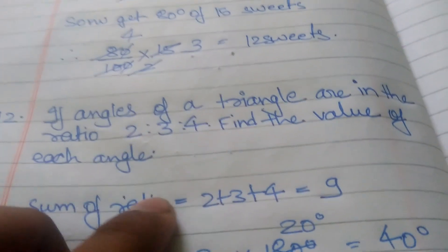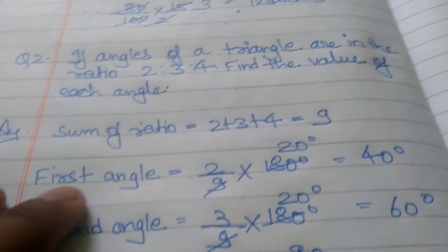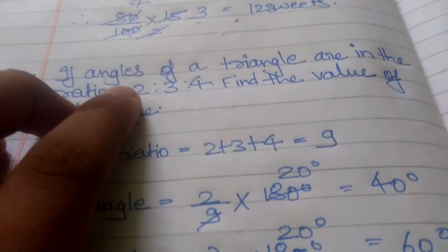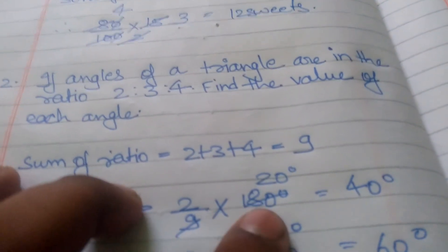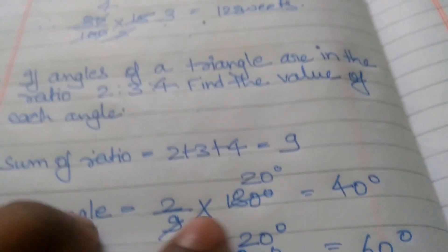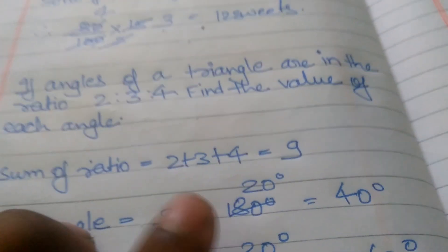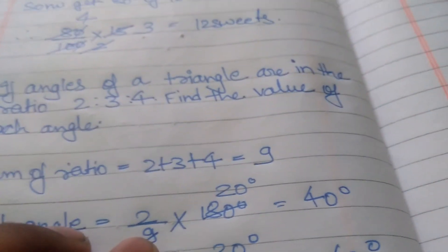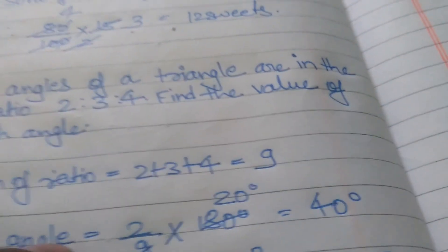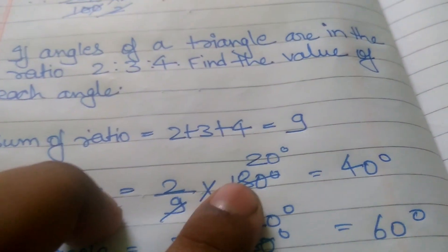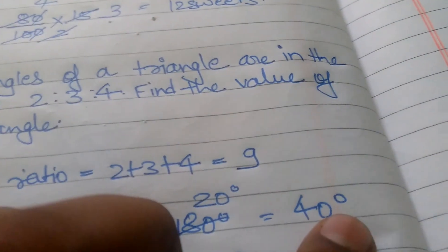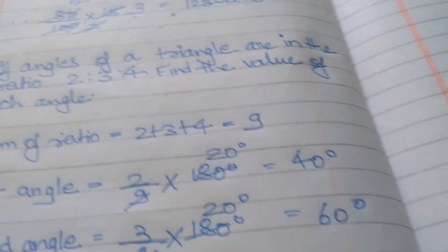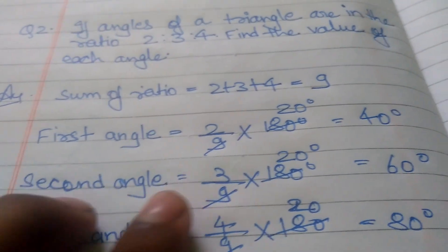First, the sum of ratios is equal to 9. The first angle equals 2 upon 9 multiplied by 180 degrees. 180 will be divided by 9, which is 20 times, and 20 multiplied by 2 is equal to 40 degrees. So the first angle is 40 degrees.